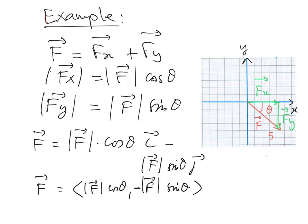Since the magnitude of F is equal to 5, the final form of the vector F will be (5 cosine theta, −5 sine theta).